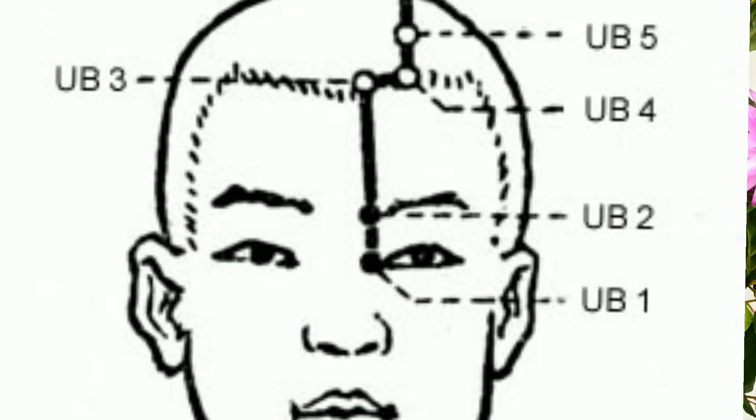The beauty of this point — even wrinkles on the forehead can be treated by activating UB3, Meichong, bilaterally directed downward for the wrinkles of the forehead and glabella. The fourth point is Quchai, UB4. That point is located one cun lateral to UB3 and 0.5 cun above the anterior hairline.